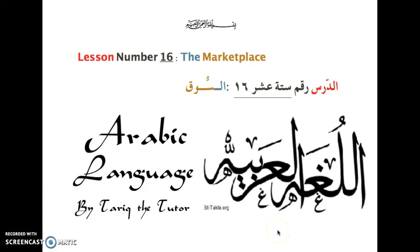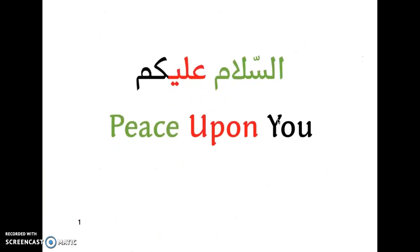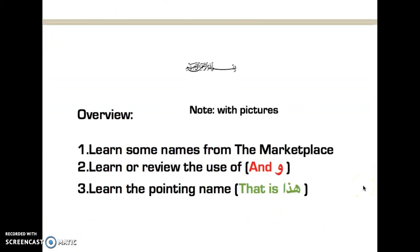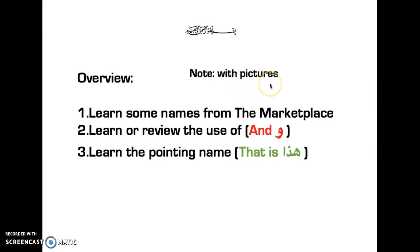Hello and welcome to Arabic language lessons. This is lesson number 16, the marketplace. As usual, we're going to begin by saying assalamu alaikum. Now that we greeted each other, this lesson is going to be special in the sense that it's going to have pictures. We're going to learn some names from the marketplace, review the use of واو which means 'and', and also learn the pointing name which means 'that is'.